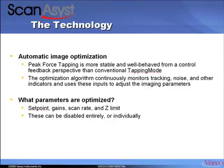Automatic image optimization is, of course, a game-changer. Peak force tapping is a much more stable method from an image optimization perspective than conventional tapping mode. This has to do with the fact that in peak force tapping we actually measure forces directly, whereas in tapping mode we monitor a gradient change by measuring a change in amplitude. The optimization algorithm continuously monitors the quality of tracking, the noise on a scan line, and other parameters, and uses these inputs to adjust the imaging parameters — set point, feedback gain, scan rate, and the limit. If you desire, you can disable the optimization entirely or individually and change these parameters by hand.